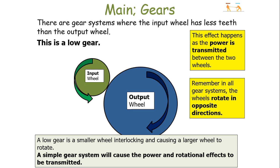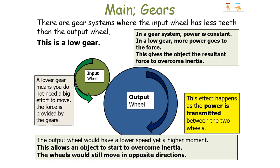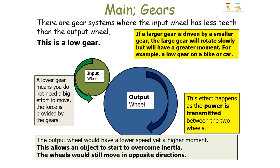In a low gear, the input wheel has fewer teeth than the output wheel. This causes the power to be constant, with more power going to the force, giving the object a resultant force to overcome inertia. The output wheel will have a lower speed yet a higher moment, because it's larger — the greater distance from the interlocking teeth to the centre gives a greater moment. So if a larger gear is driven by a smaller gear, the large gear will rotate slowly but will have a greater moment, making it more likely to accelerate — which is what you want from your lower gears.